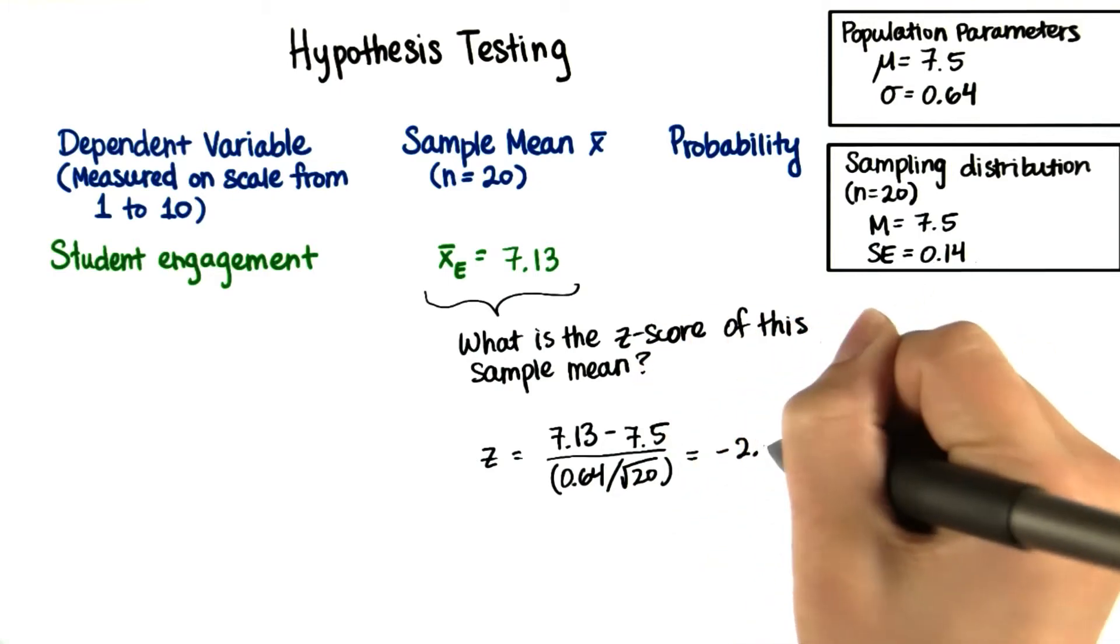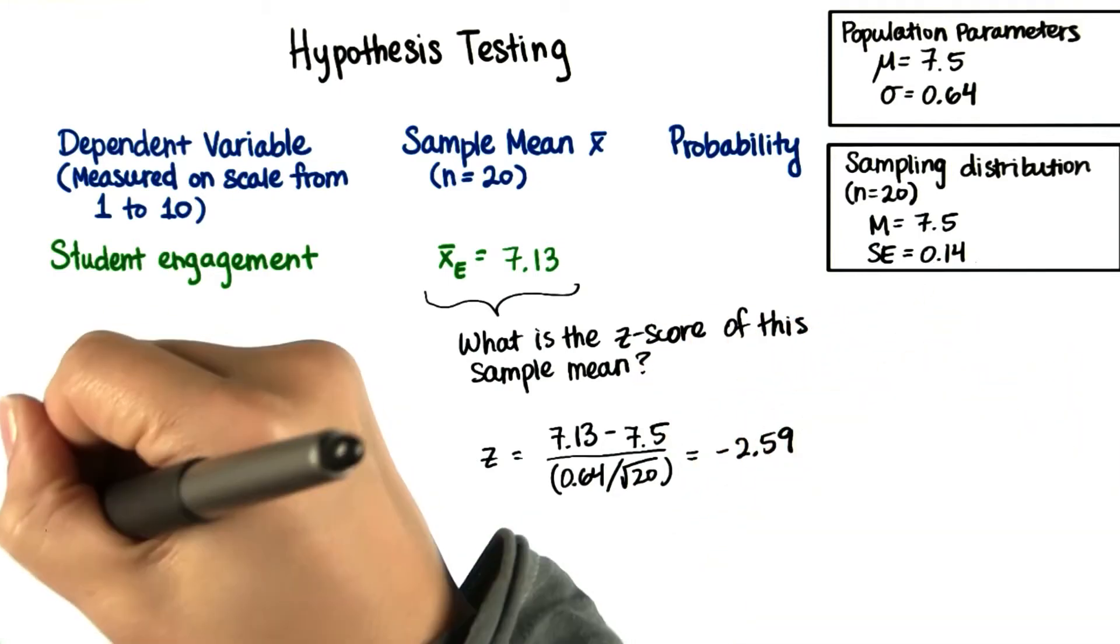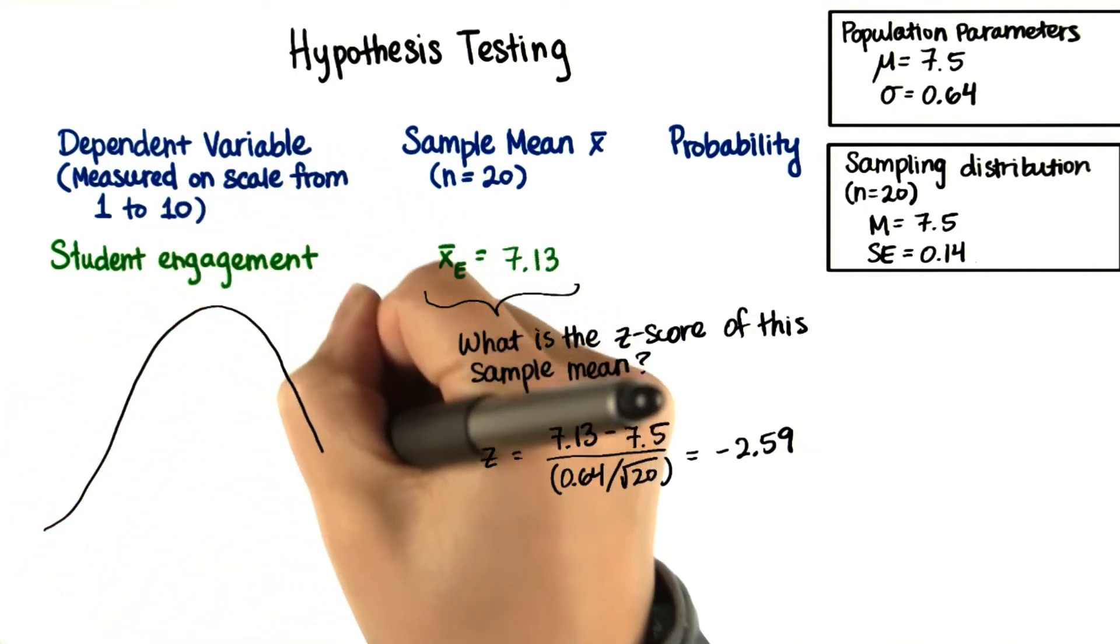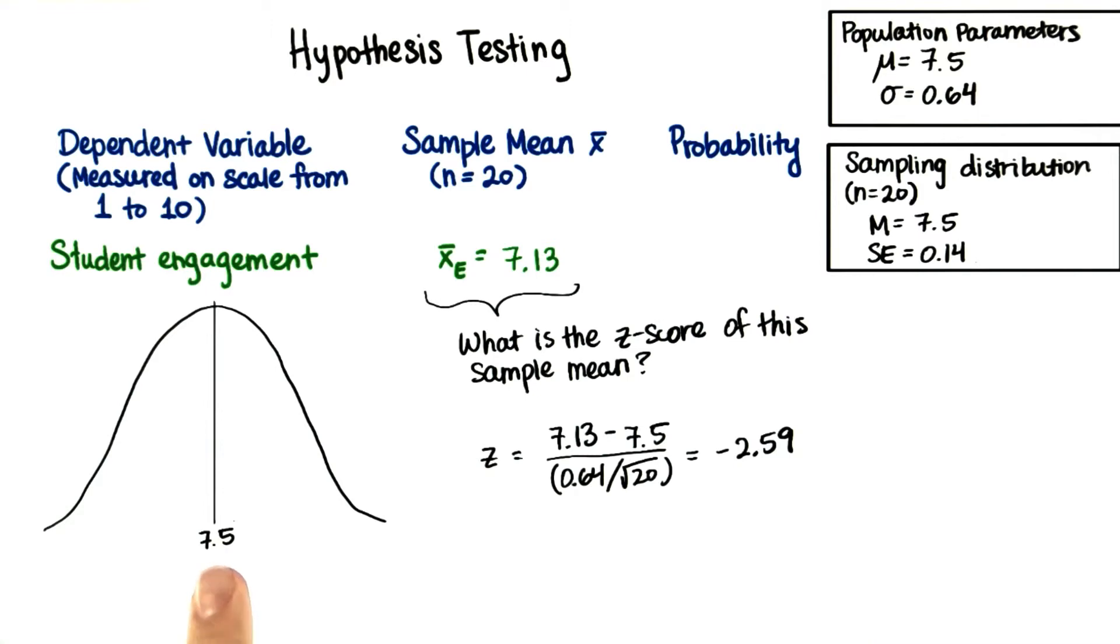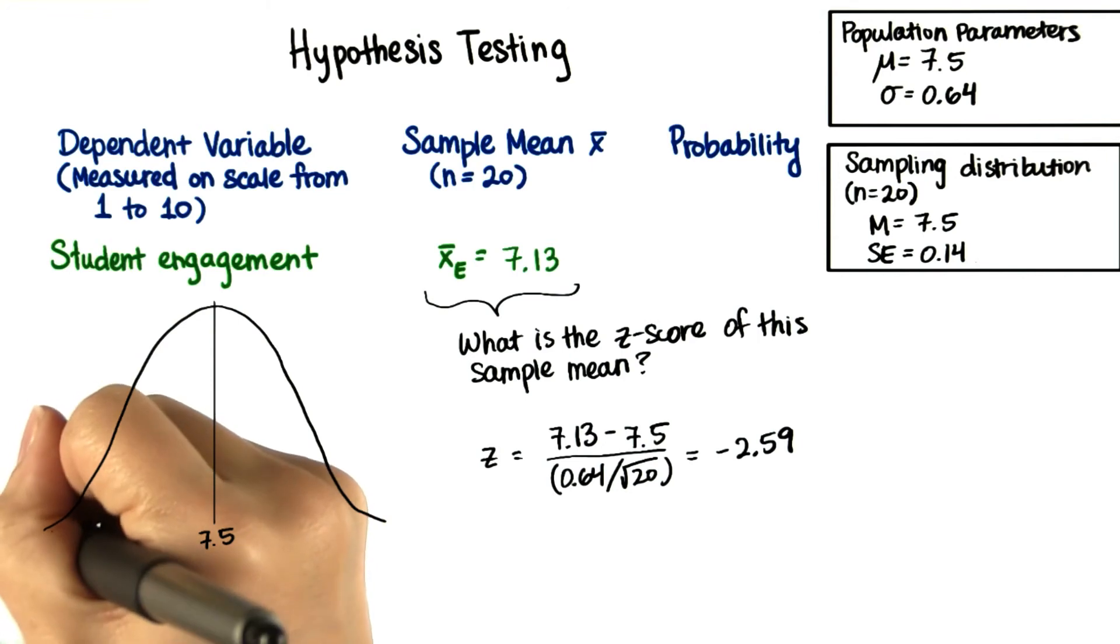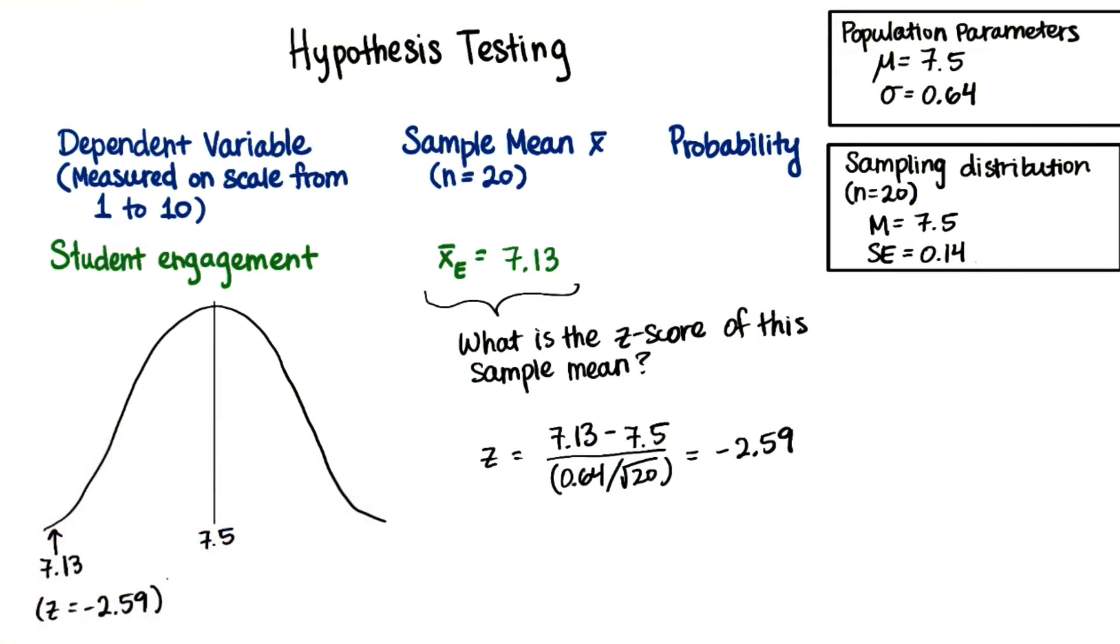So we get about negative 2.59. If we look at the distribution of sample means, and here's 7.5, the population mean and the mean of sample means, negative 2.59 is way over here. So what does this mean?